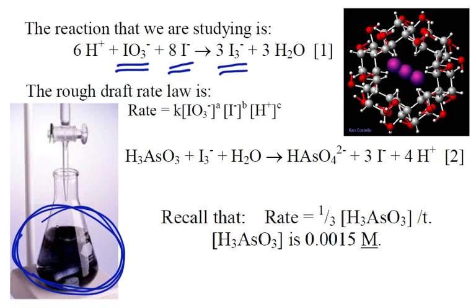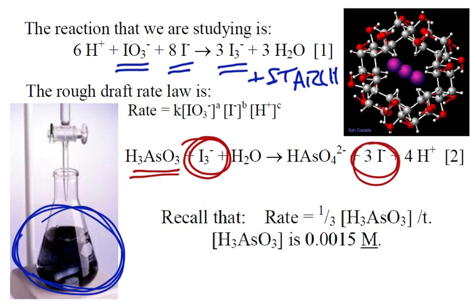Now the tri-iodide then mixes with starch, but as we mix these things together, before they actually have a chance to react, this reducing agent, arsenious acid in this case, comes in and changes our tri-iodide ion back into iodide.